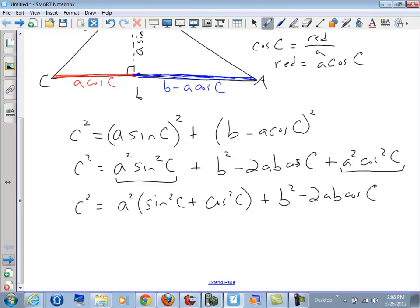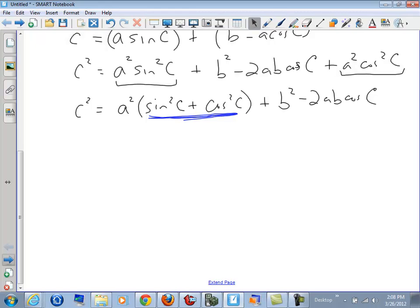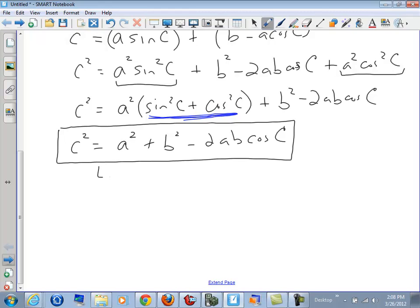And from our trigonometric identities, we should remember that sine squared of C plus cosine squared of C is equal to 1. So that leaves us c squared equals a squared times 1 plus b squared minus 2ab times the cosine of C. And this result is called the law of cosines.